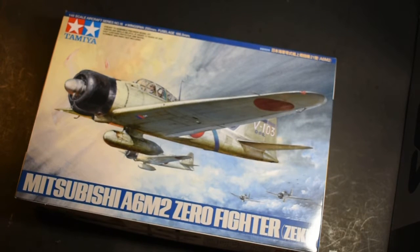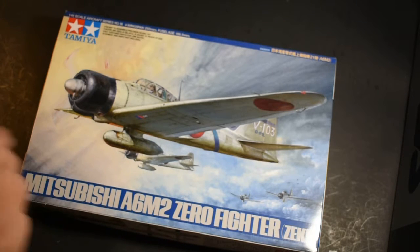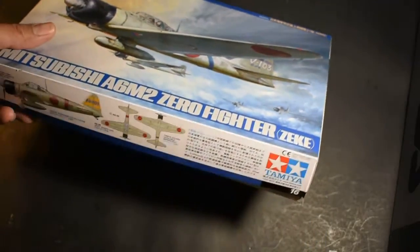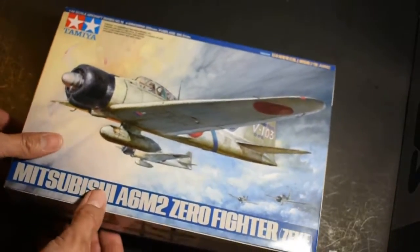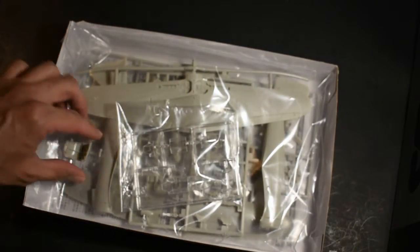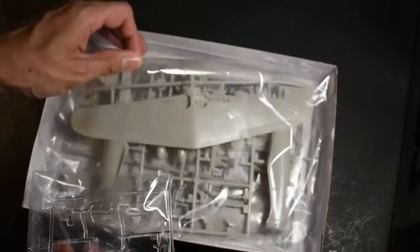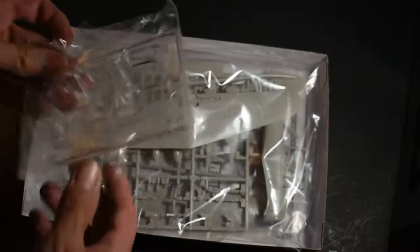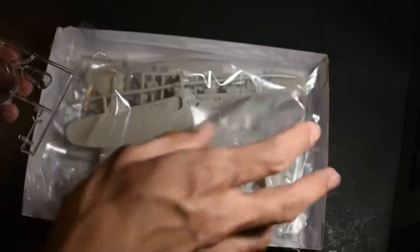Alright, this is the Mitsubishi A6M2-0 by Tamiya, 1/48 scale. Go ahead and open the box up. Pretty simple kit here, not a whole lot of parts. Shouldn't take too long to build.